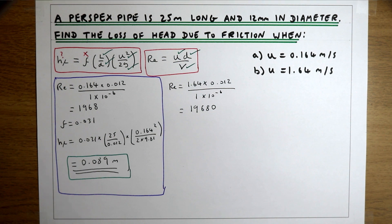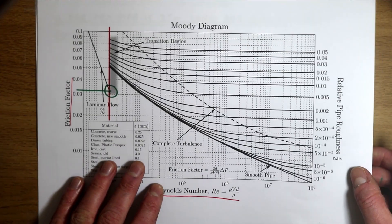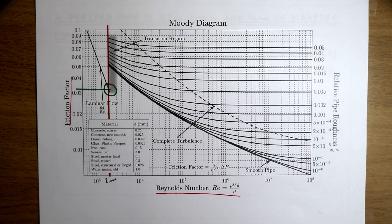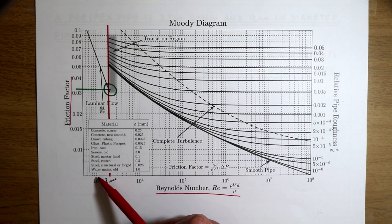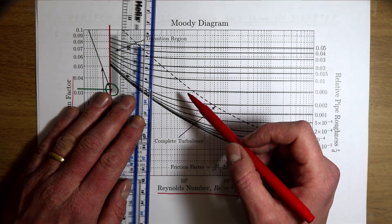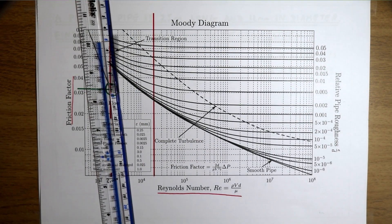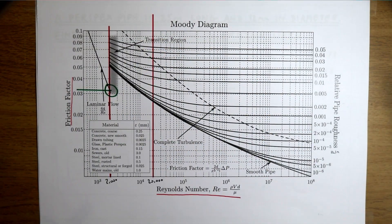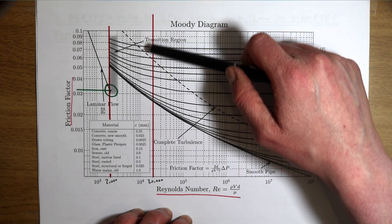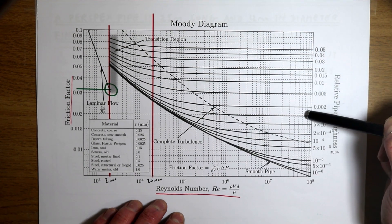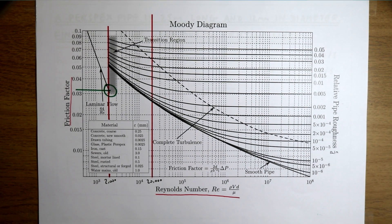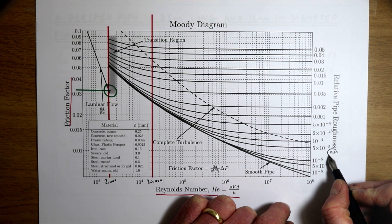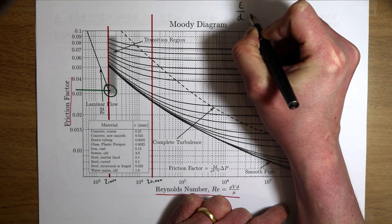Our Reynolds number is 19,680 — we round that to 20,000 — and we find 20,000 on the x-axis of the Moody diagram. Now there's a whole range of possible black lines that our vertical line crosses, and each one corresponds to a different type of pipe. To choose the correct line, we use the relative roughness, which is the roughness of the pipe divided by the pipe diameter.